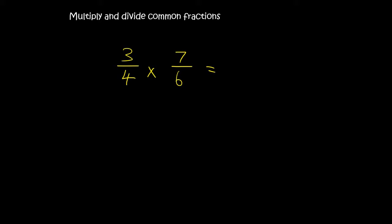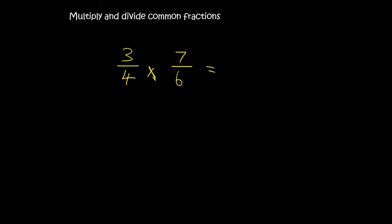You can cross-cancel — that's the method I would highly advise because it makes the numbers a lot smaller. Let these arrows remind you that the 3 and the 6 can be simplified, and the 4 and the 7 can be simplified. Starting with 3 and 6: what number fits into both? The number 3. 3 goes into itself once and into 6 twice. There is no number that can go into both 7 and 4, so we can't simplify those.